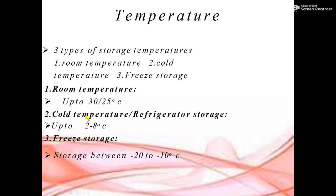The second one is cold temperature or refrigerator storage. Cold temperature is almost from 2 to 8 degrees centigrade. Vaccines can also be stored at this temperature, 0 to 8 degrees centigrade. The third one is freeze storage, which is storage between minus 20 to minus 10 degrees centigrade.